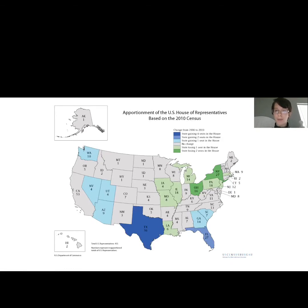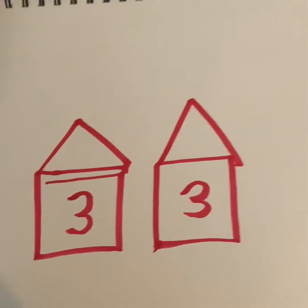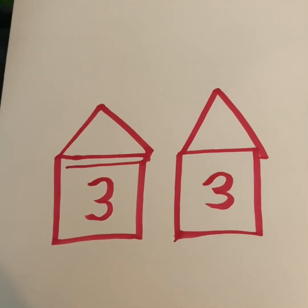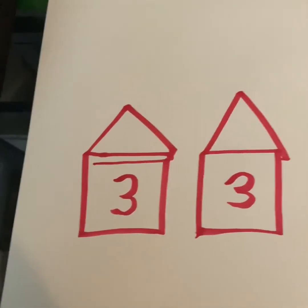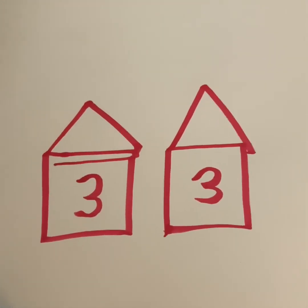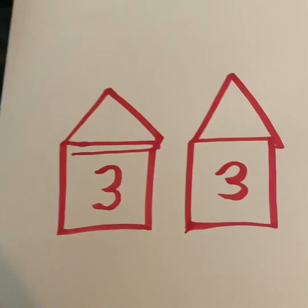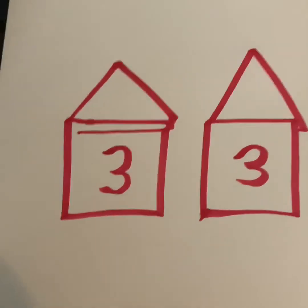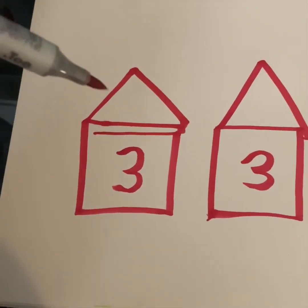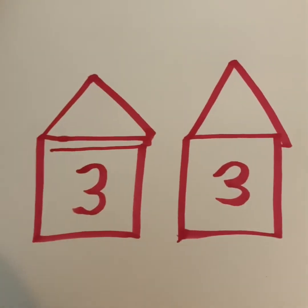Now that you know a little bit about how populations work, I'm going to bring you to our activity to go along with this. Now that we know how the House of Representatives works, we're going to do a fun little art activity where we're going to build our own little neighborhood of representatives. You're going to start by drawing your house, and inside your house you're going to write the number of people that live with you. I've got three people that live with me, so I'm going to put a three. I'll leave it up to you whether or not you want to count your pets.